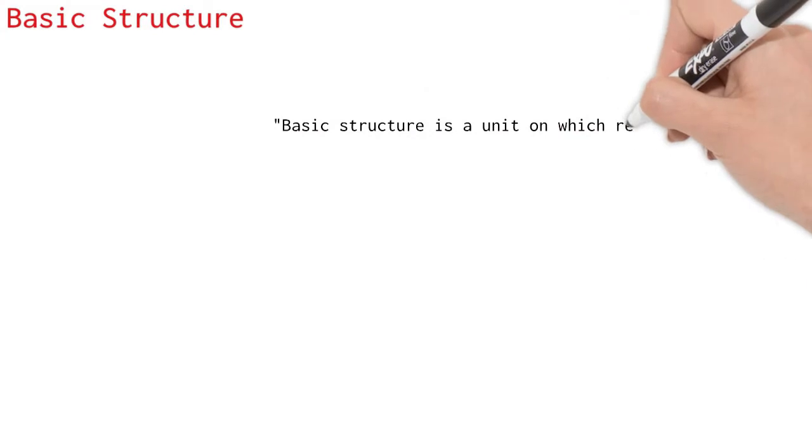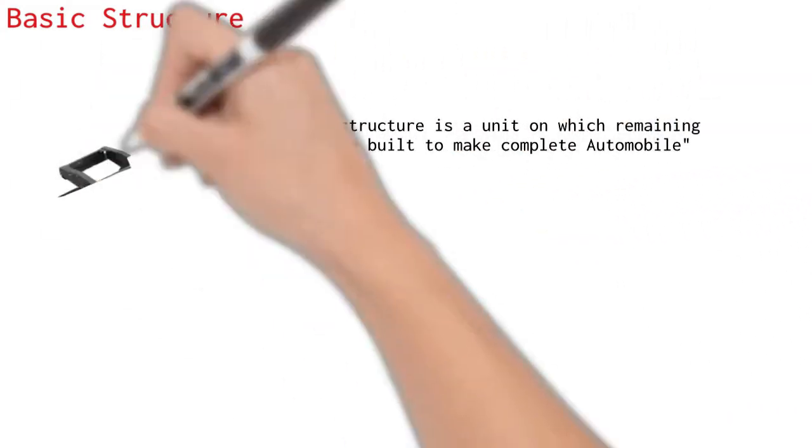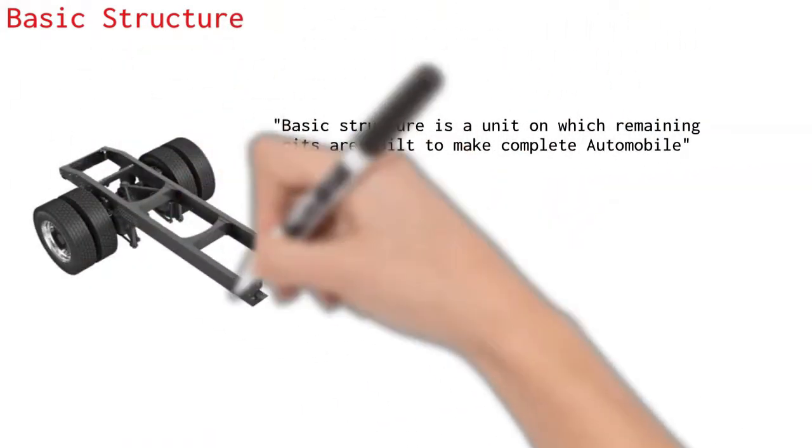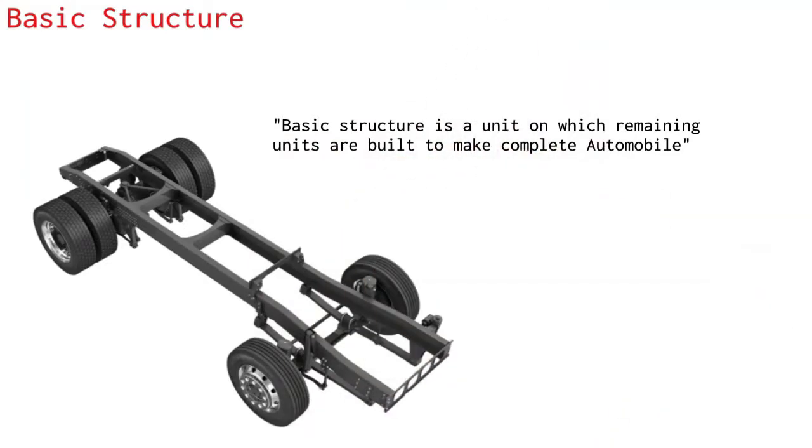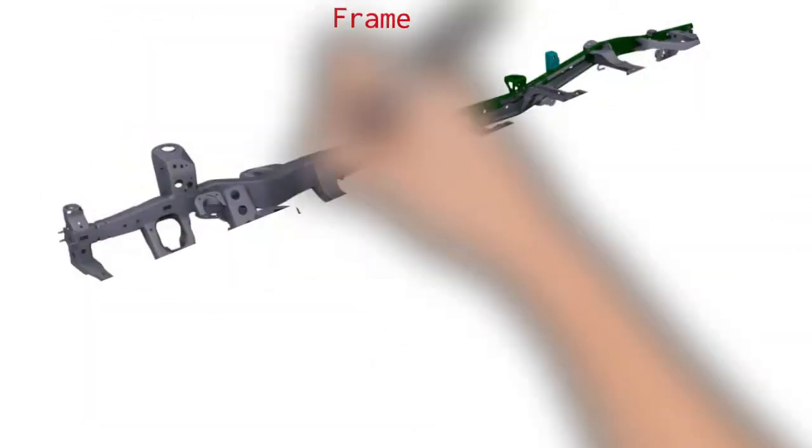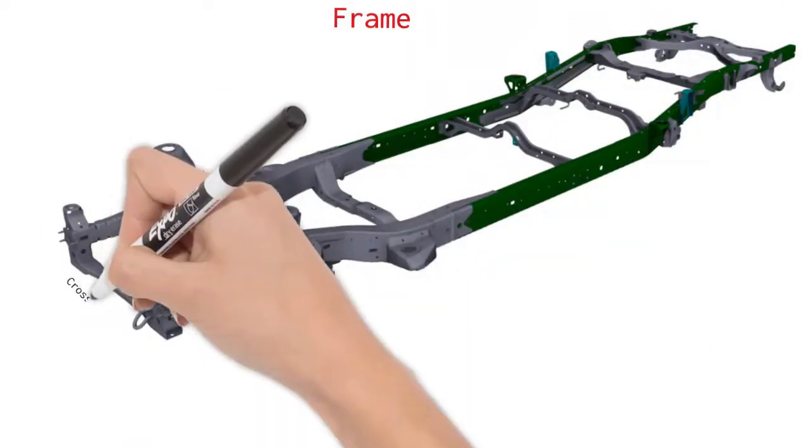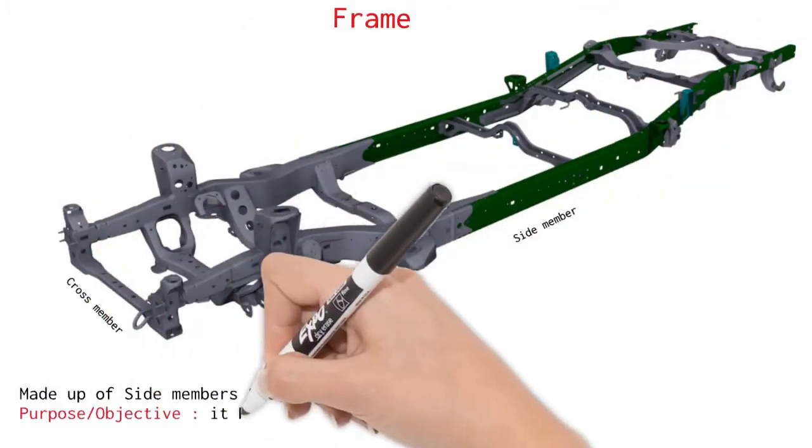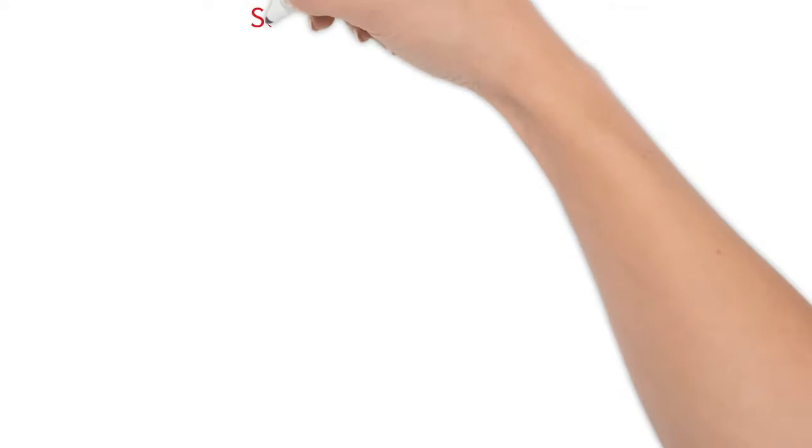The basic structure. Basic structure is a unit on which remaining units are built to make the complete automobile. Basic structure is made of following systems and components. Frame. Frame is made up of side members and cross members generally. It provides foundation for engine and body of the vehicle.